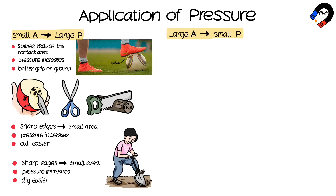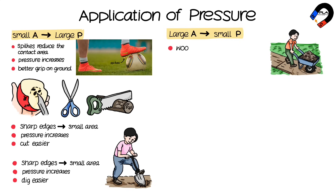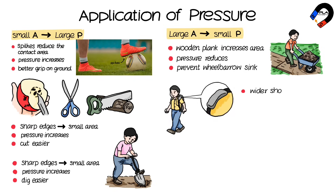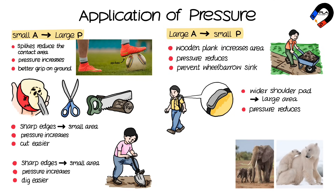An application of pressure in everyday life is when small pressure is achieved due to a large area. For example, a wooden plank increases the surface area of contact with soft ground, which reduces the pressure and prevents the wheelbarrow from sinking. The wider shoulder pad has a large area which reduces the pressure acting on the shoulder.